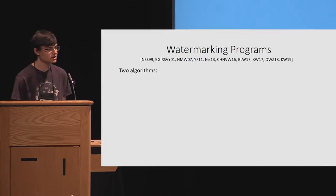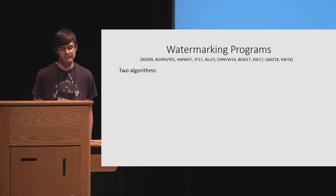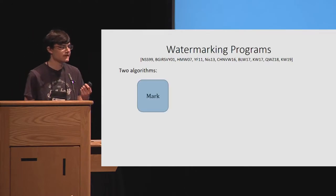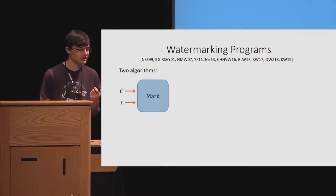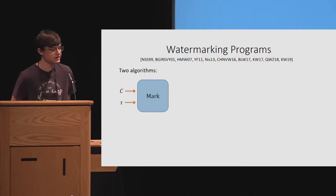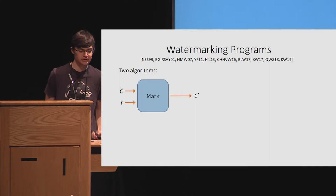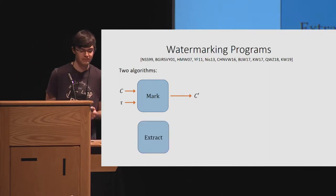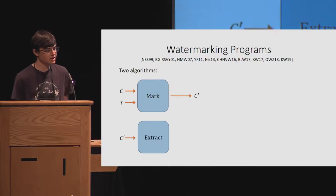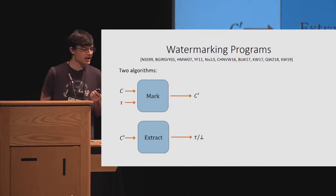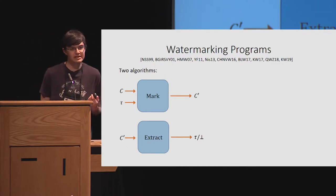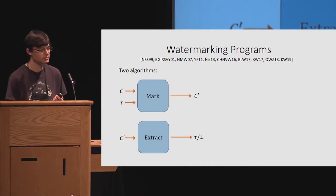So we heard this in the previous talk, but just to quickly recap: when we think about watermarking programs, there are two basic algorithms. There's a mark algorithm, which takes as input a program modeled as a circuit and some tag tau or mark, and outputs a circuit C prime that indicates the marked circuit. And then there's an extract algorithm that takes as input some circuit C prime and outputs either a tag or bot — the tag indicating the program was marked, bot indicating it was unmarked.